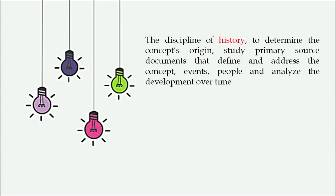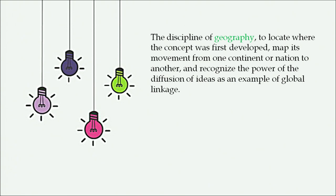The discipline of history helps determine the concept's origin, study primary sources and documents, analyze events and people, and analyze development over time. The discipline of geography helps locate where a concept was first developed, map its movement from one continent or nation to another, and recognize the power of the diffusion of ideas as an example of global linkage.